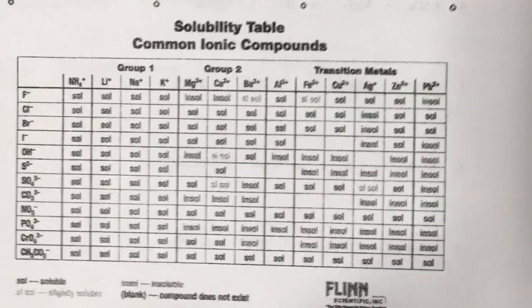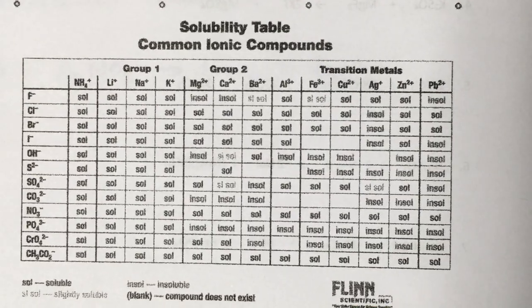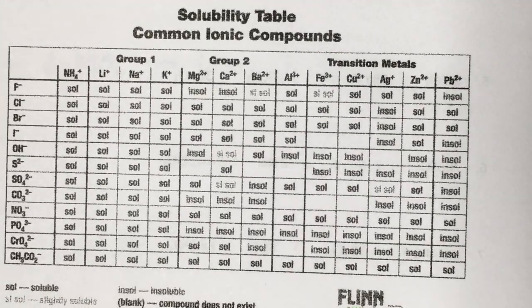A solubility table lists common ions, positive and negative, and it tells you if the combination of those ions would produce a soluble compound, something that dissolves in water, or an insoluble compound, something that does not dissolve in water.